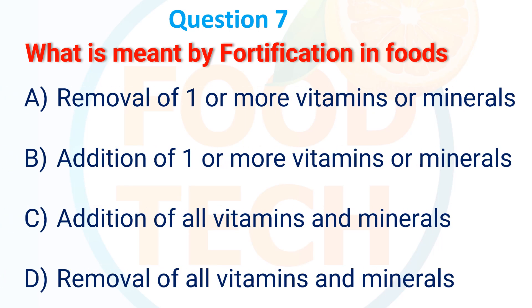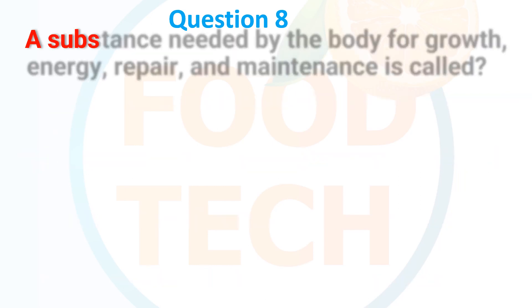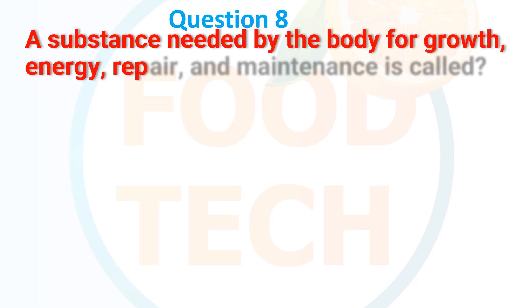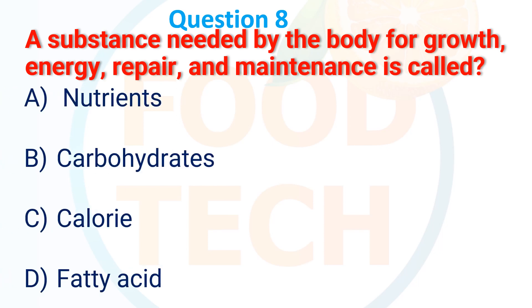Question 7: What is meant by fortification in food? A. Remove one or more vitamins and minerals, B. Add one or more vitamins or minerals, C. Addition of all vitamins and minerals, D. Removal of all vitamins and minerals. The answer is B. Addition of one or more vitamins and minerals.